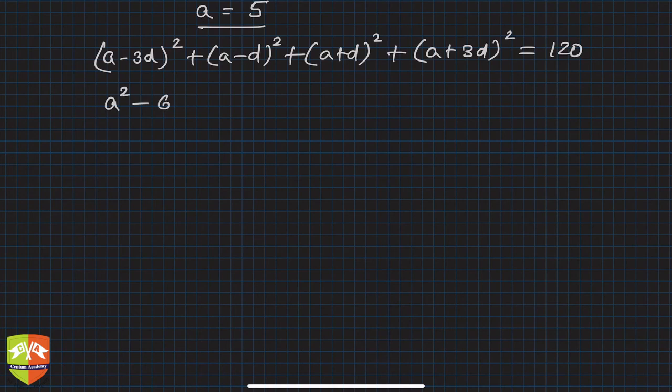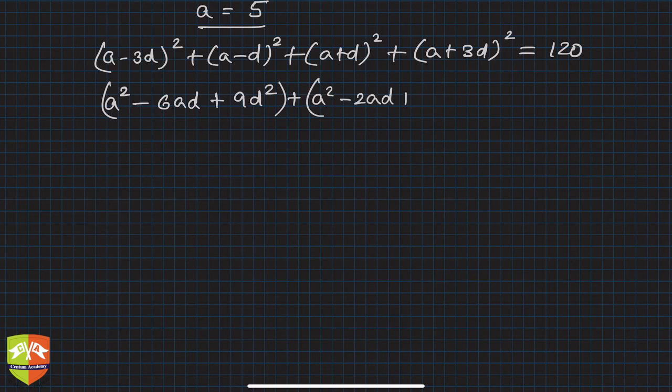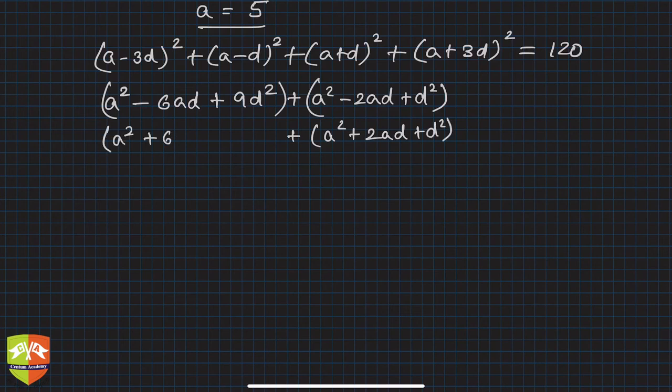Opening the brackets, you'll get a squared minus 6ad plus 9d squared, plus a squared minus 2ad plus d squared, similarly a squared plus 2ad plus d squared, and a squared plus 6ad plus 9d squared, and this entire thing is 120.